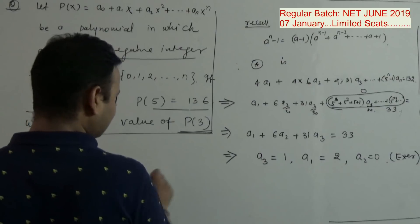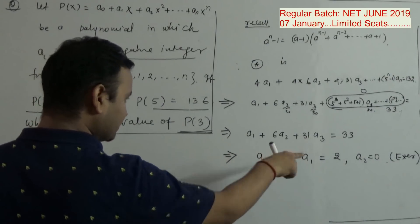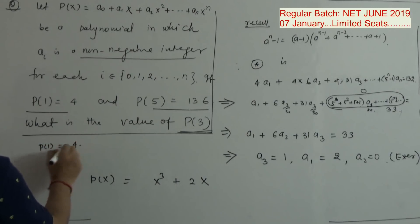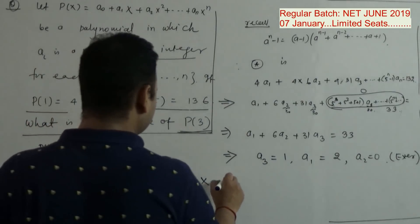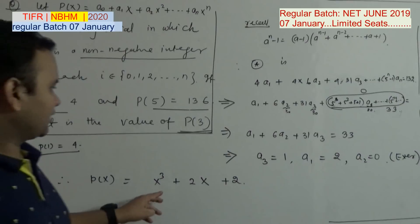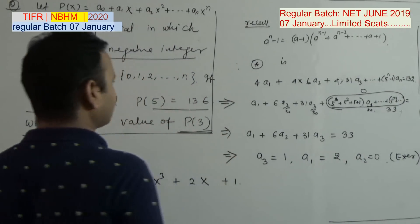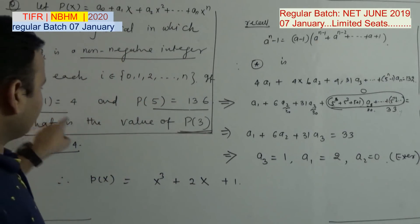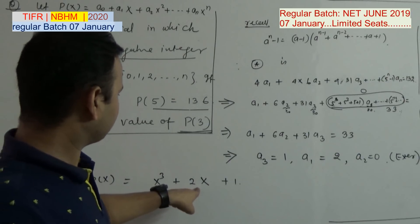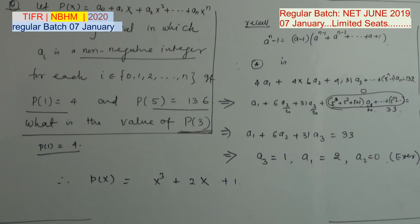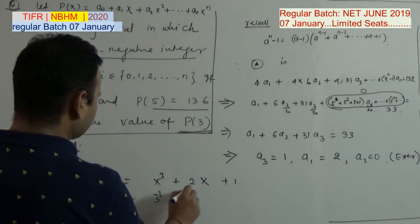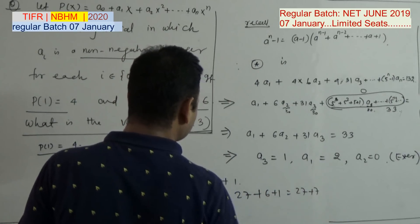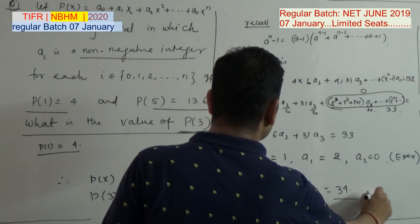So what is your polynomial? My polynomial P(x) is nothing but x³ + 2x + 1 — since A_3=1, A_2=0, A_1=2, and A_0=1 (to satisfy P(1)=4: 1+0+2+1=4). Let's verify: P(5) = 125 + 10 + 1 = 136. Correct! And P(3) = 27 + 6 + 1 = 34. Wait — 27 + 6 + 1 = 34. So the value of P(3) is 34.